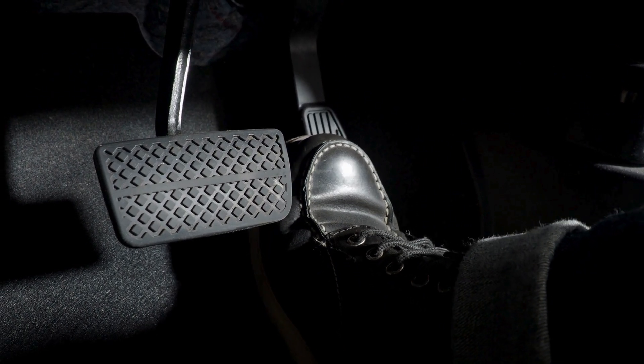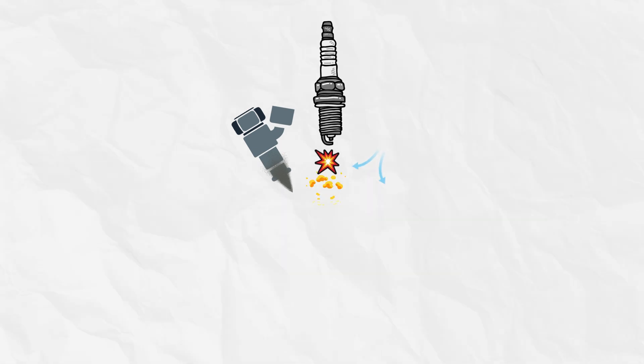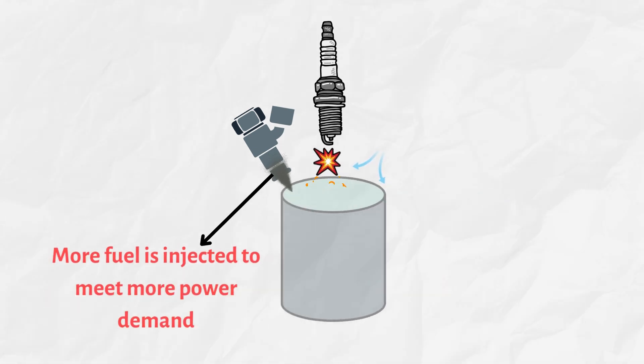When you press down the gas pedal, the valve of the throttle body opens more to allow more air. In this way, more fuel is injected to meet increasing power demand.